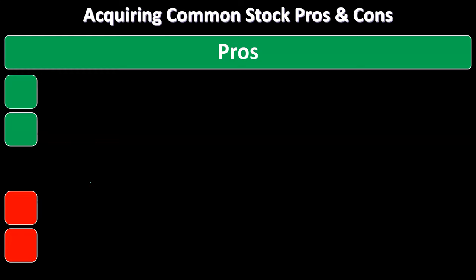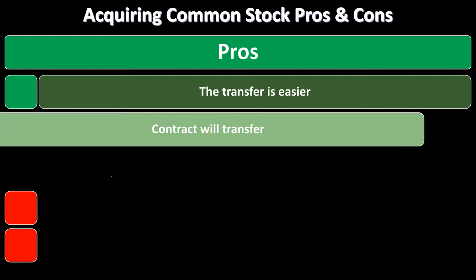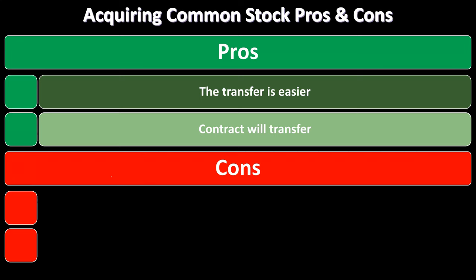If we go to acquiring common stock instead of the assets, one company buys a controlling interest — typically 51% or more of the stock — creating a subsidiary relationship. The pros are that the transfer is typically much easier, and the contracts will transfer with the company. If you're buying a company because they have valuable long-lasting contracts you want to keep, purchasing the entire company means those contracts come with it.